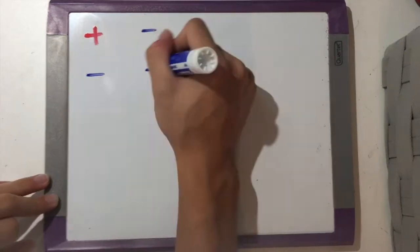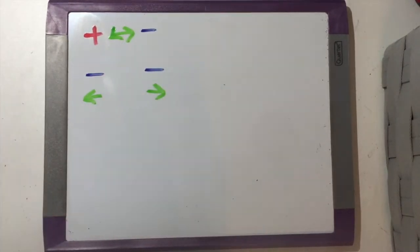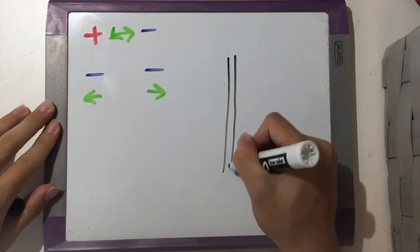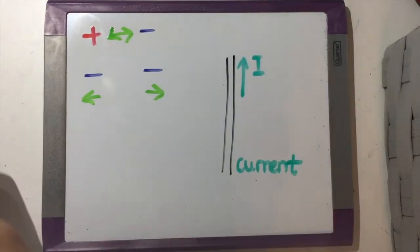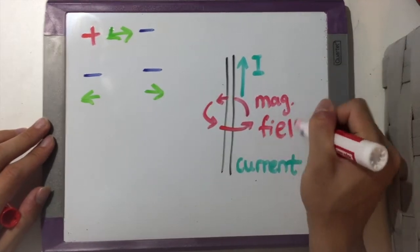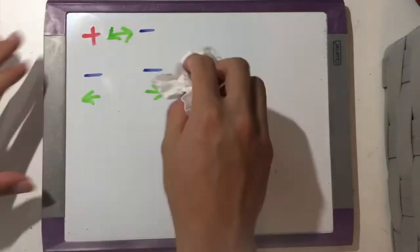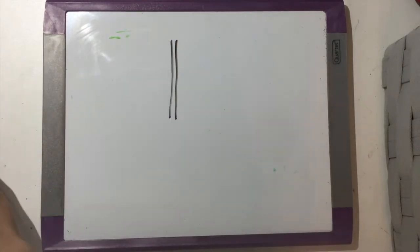Sure, both of them follow the opposites attract and likes repel rule, but how are they actually connected? Put simply, an electric current running through a wire produces a magnetic field, and vice versa. A change in magnetic field, called a magnetic flux, produces an electric current.